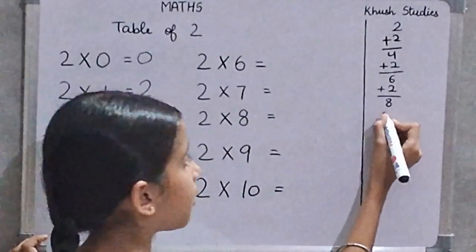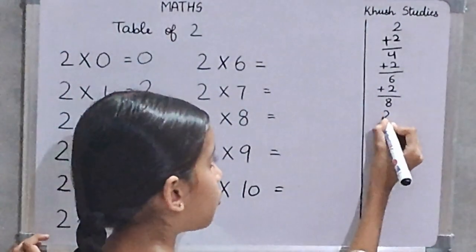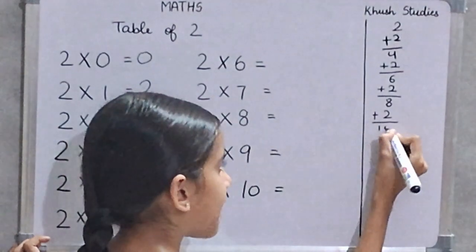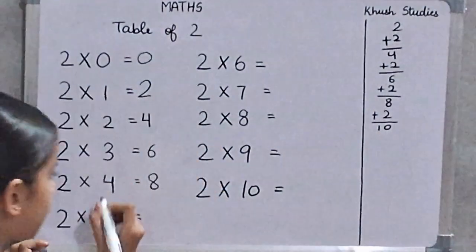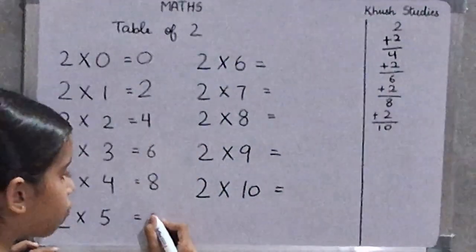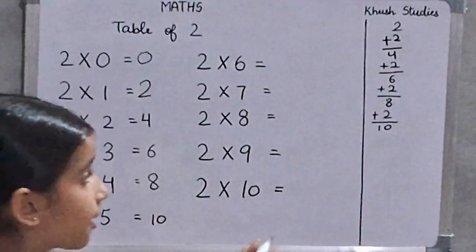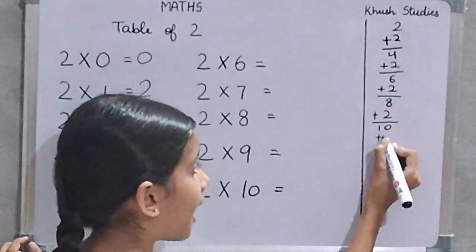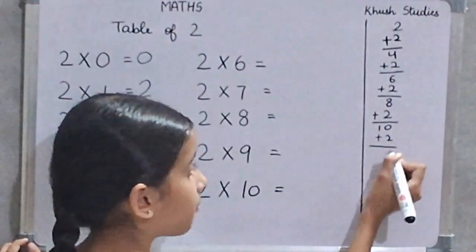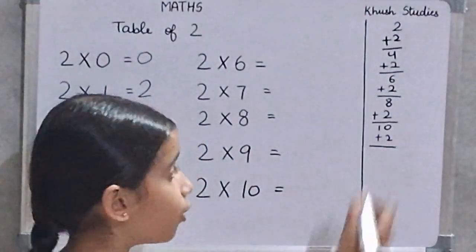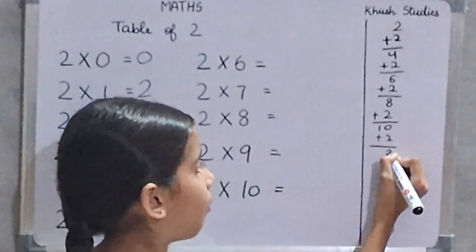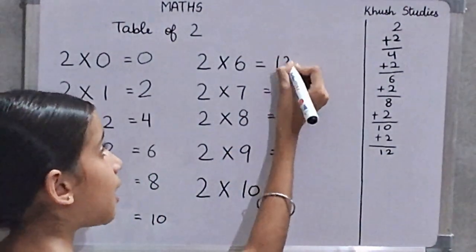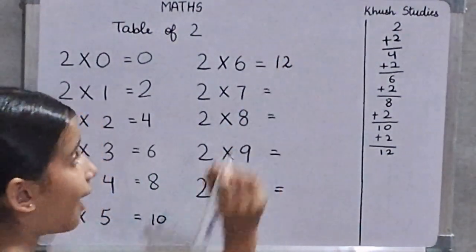Now, we will add 2. 8 plus 2 is 10. So, 2 fives are 10. Now, we will add 2. 10 plus 2 is 12. So, 2 sixes are 12.